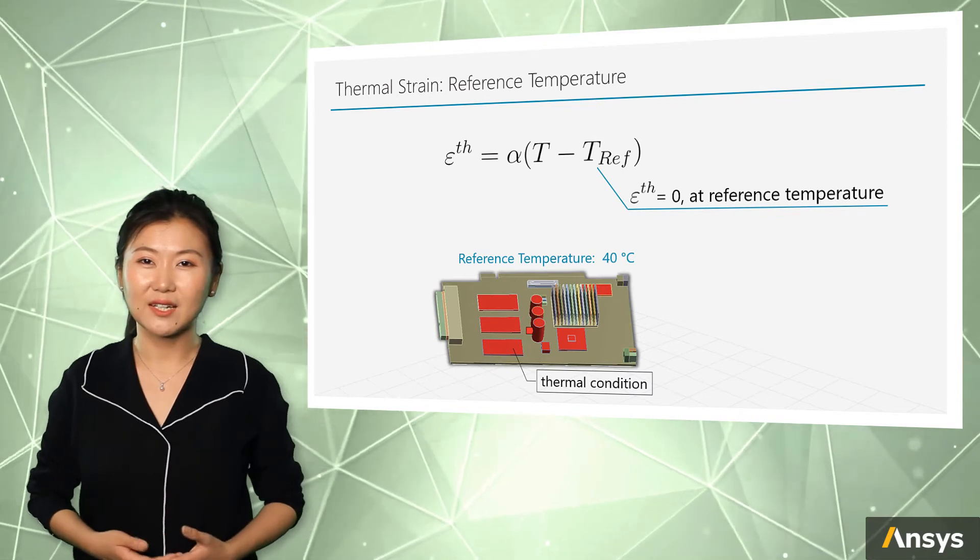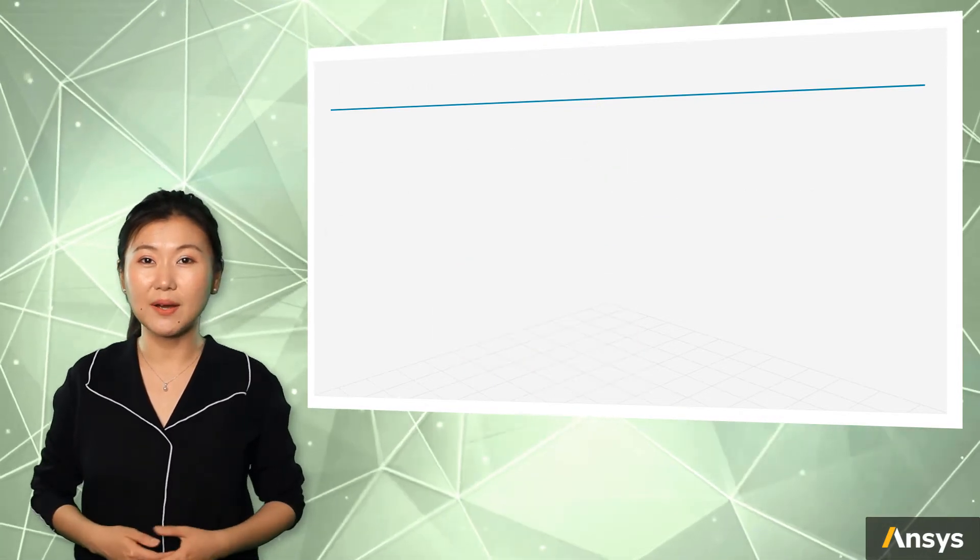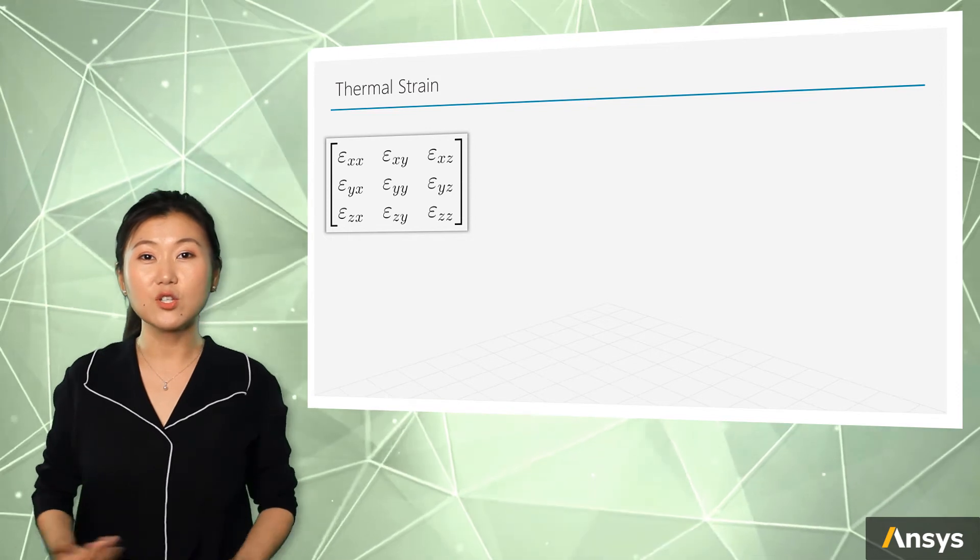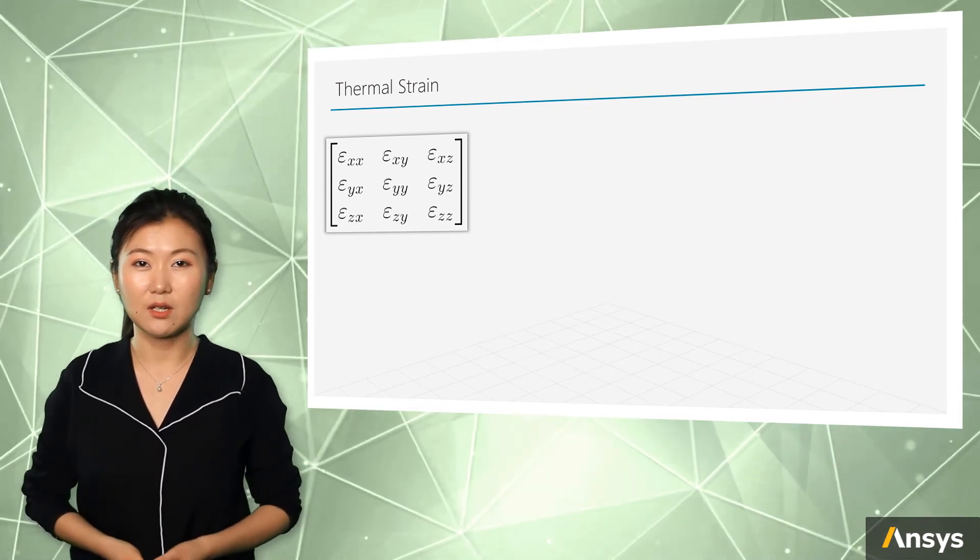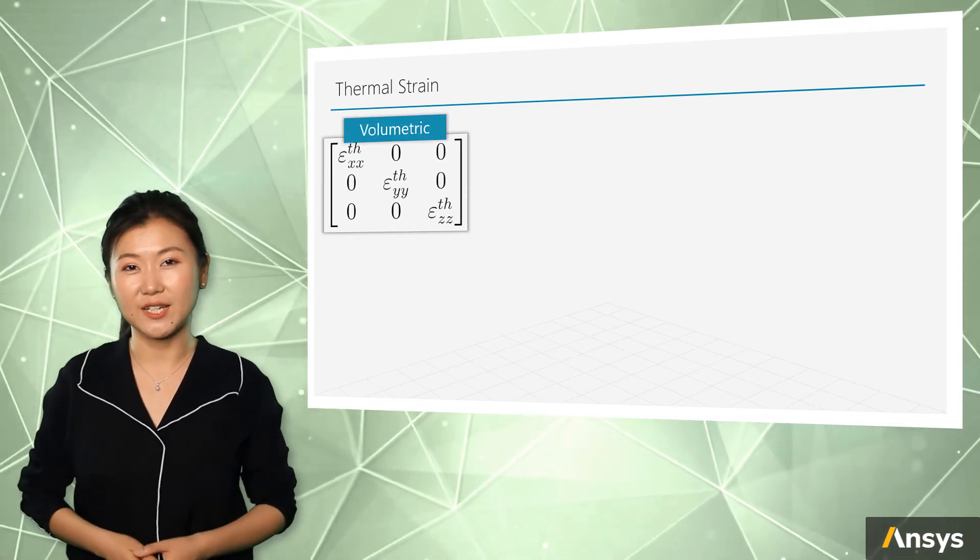You might remind that in general, strain is a 3x3 tensor with 9 components. For thermal strain, in tensor form, there are only three diagonal terms because it is a volumetric quantity in 3D space.